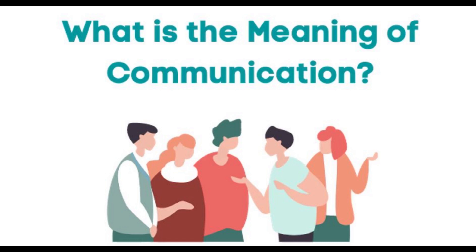Appropriateness means that the communicative behavior meets social standards and expectations. Communication theorist Brian H. Spitzberg defines it as the perceived legitimacy or acceptability of behavior in a given context. This means that the speaker is aware of the social and cultural context in order to adapt and express the message in an acceptable way. For example, to bid farewell to their teacher, a student may use the expression 'goodbye, sir' but not 'I gotta split, man,' which they may use when talking to a peer. To be both effective and appropriate means to achieve one's preferred outcomes in a way that follows social standards and expectations.